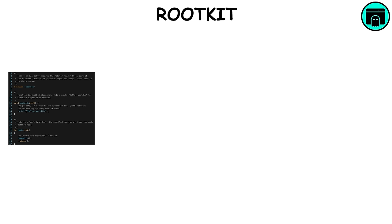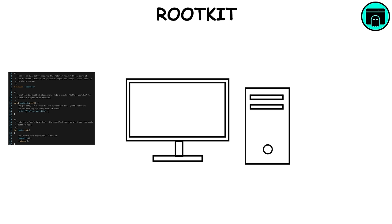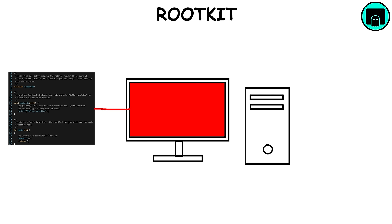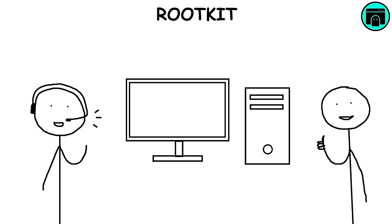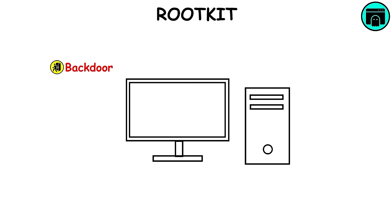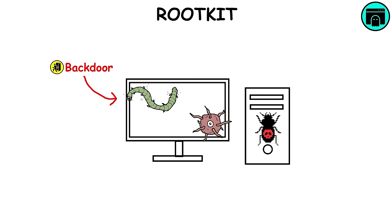Rootkit. A rootkit is a program or a collection of malicious software tools that give a threat actor remote access to and control over a computer. Although this type of software has some legitimate uses, such as providing remote end-user support, most rootkits open a backdoor on victim systems to introduce every type of malware or to use the system for further network security attacks.